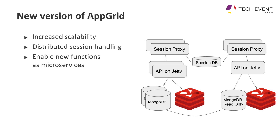What did we want to have instead? We really needed increased scalability, particularly for session handling — that's how we track our users and ensure they're authorized. We also wanted to enable new features as microservices rather than keep adding to the monolith. The decision was to add a session proxy in front with its own session store, while keeping the basic monolith and its database behind it. That way we can spin up more instances and also add separate services behind the same session layer.